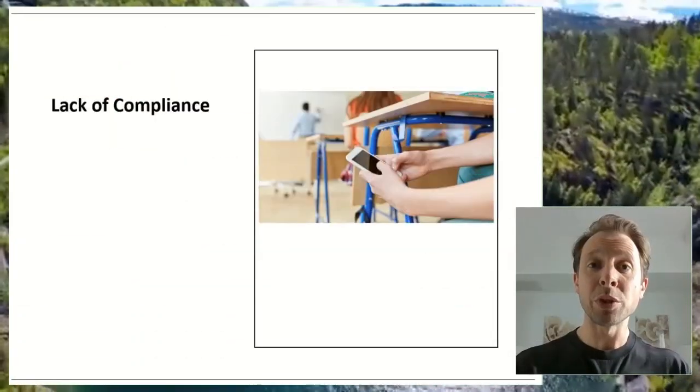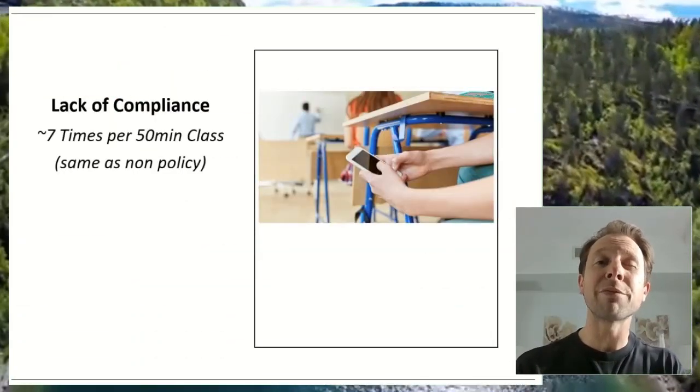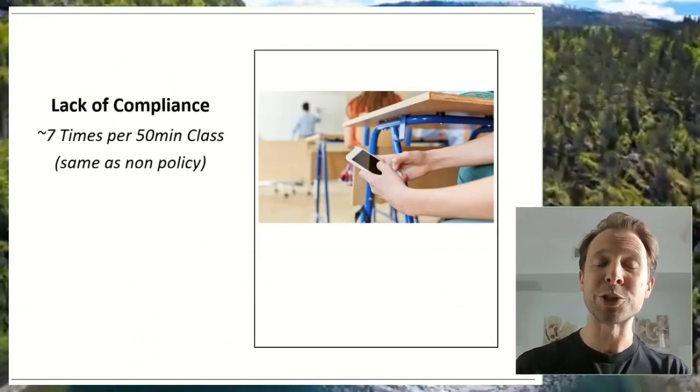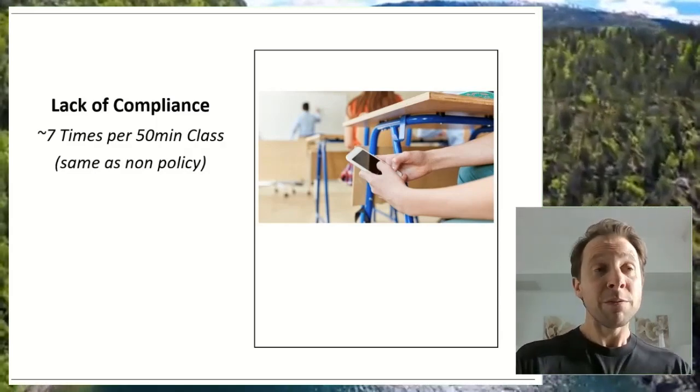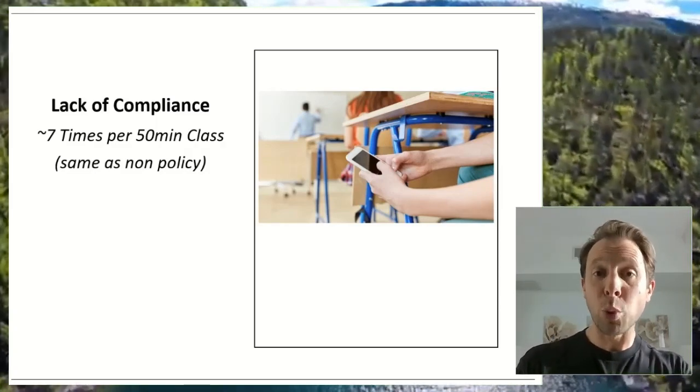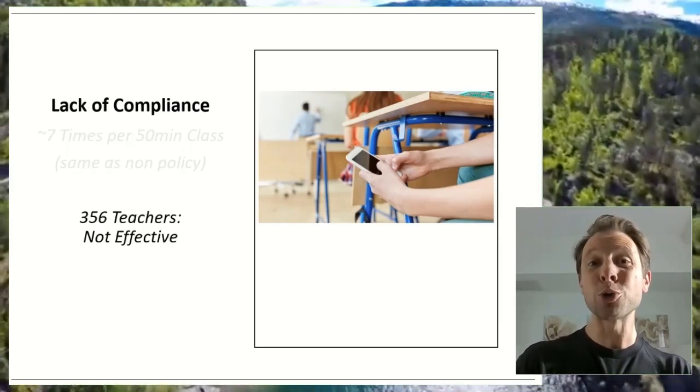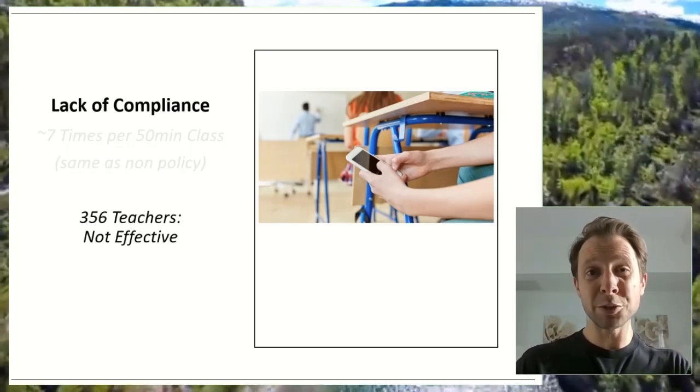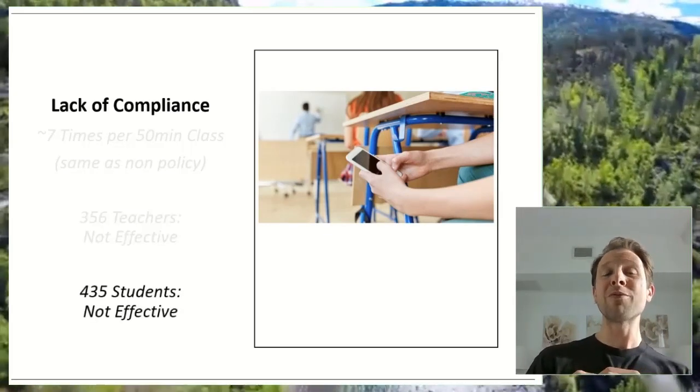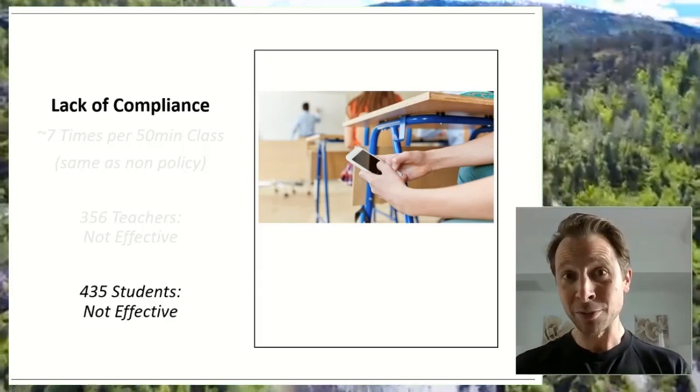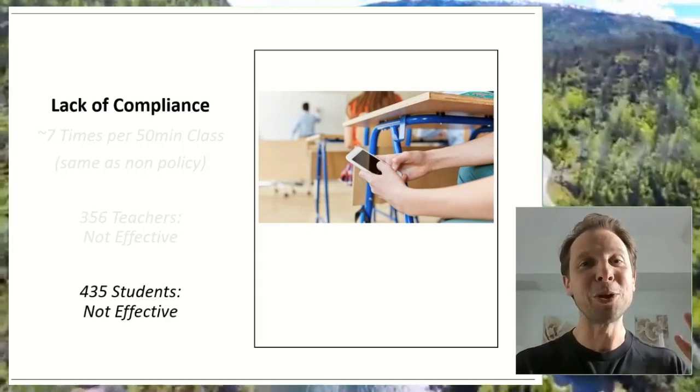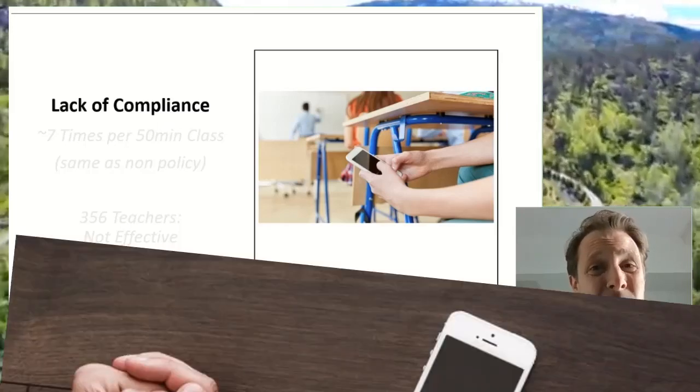And a couple of research projects have looked explicitly at this. One found that in environments with restrictions, kids still check their phones seven times on average during a 50 minute class. And when 356 different teachers from K through 12 were interviewed in another study, they flat out said cell phone policies aren't working. And when those same researchers then interviewed 435 students, the students themselves said, yeah, the policies aren't effective. We don't pay attention to them. We don't do it. So lack of compliance is a big issue.